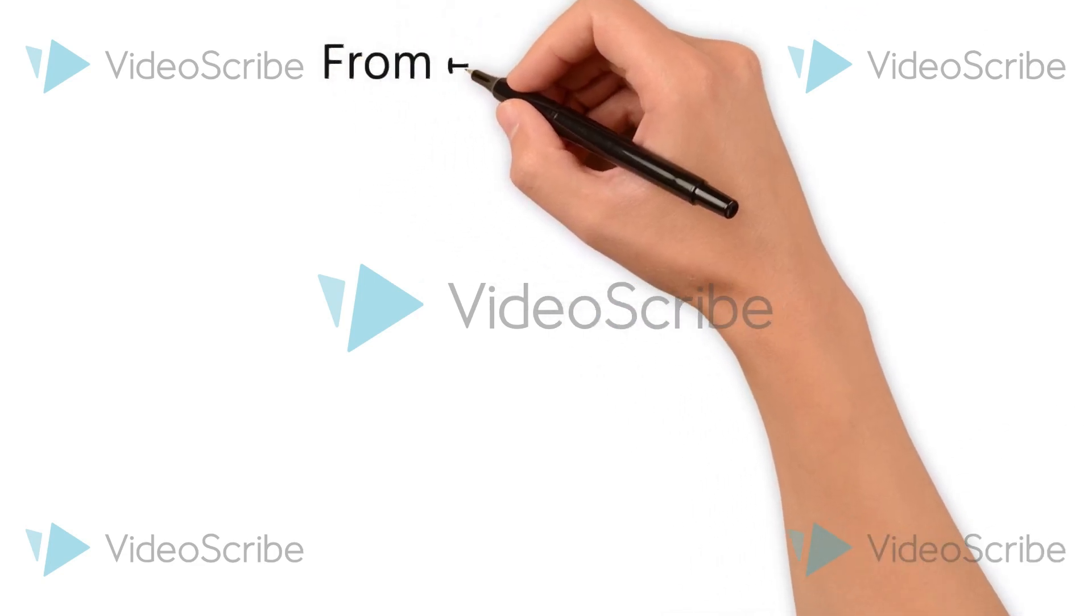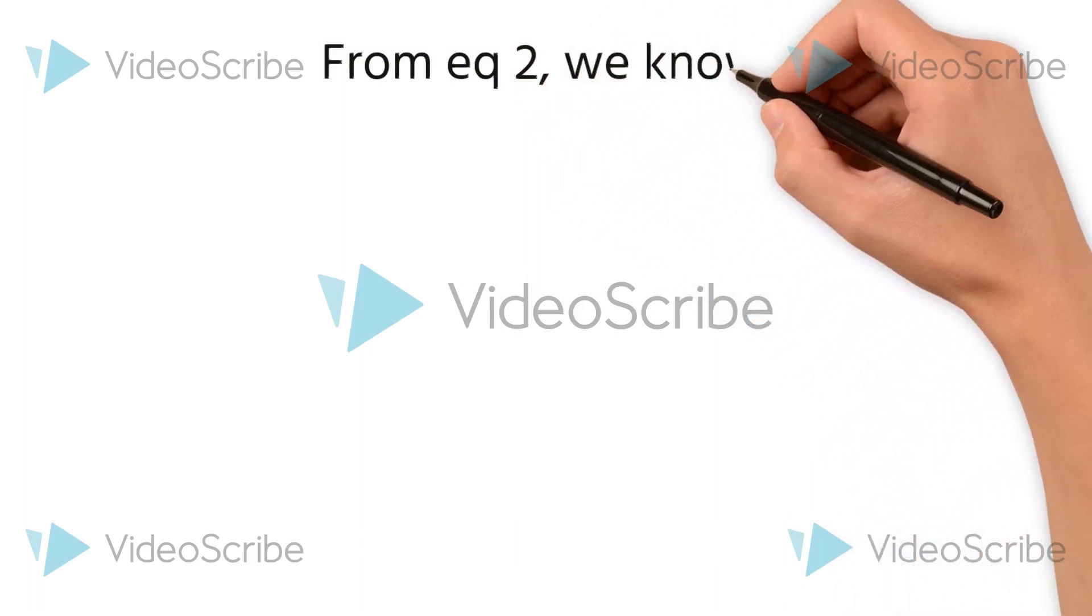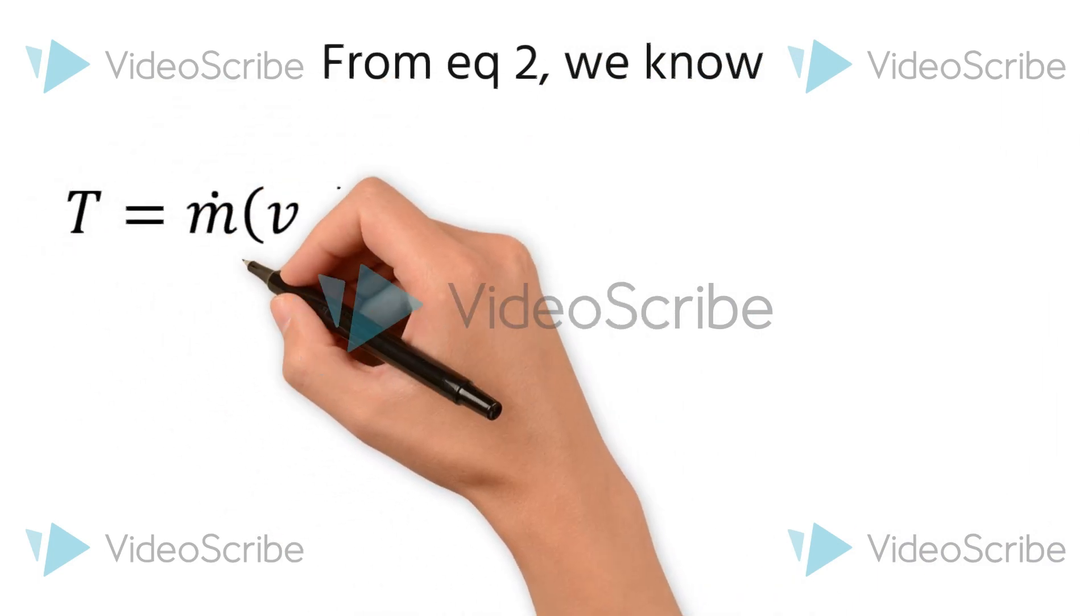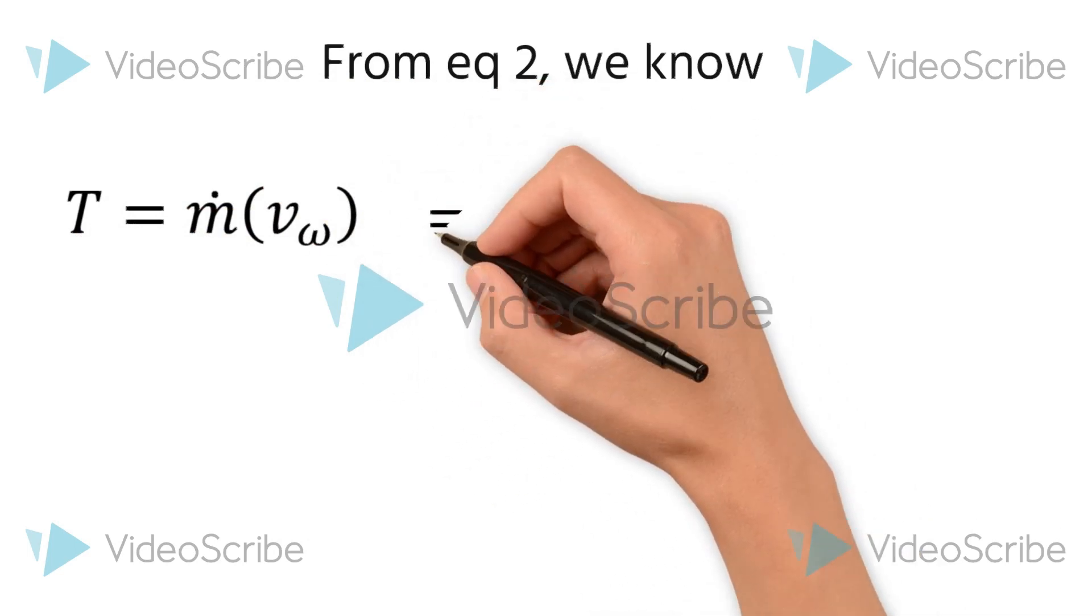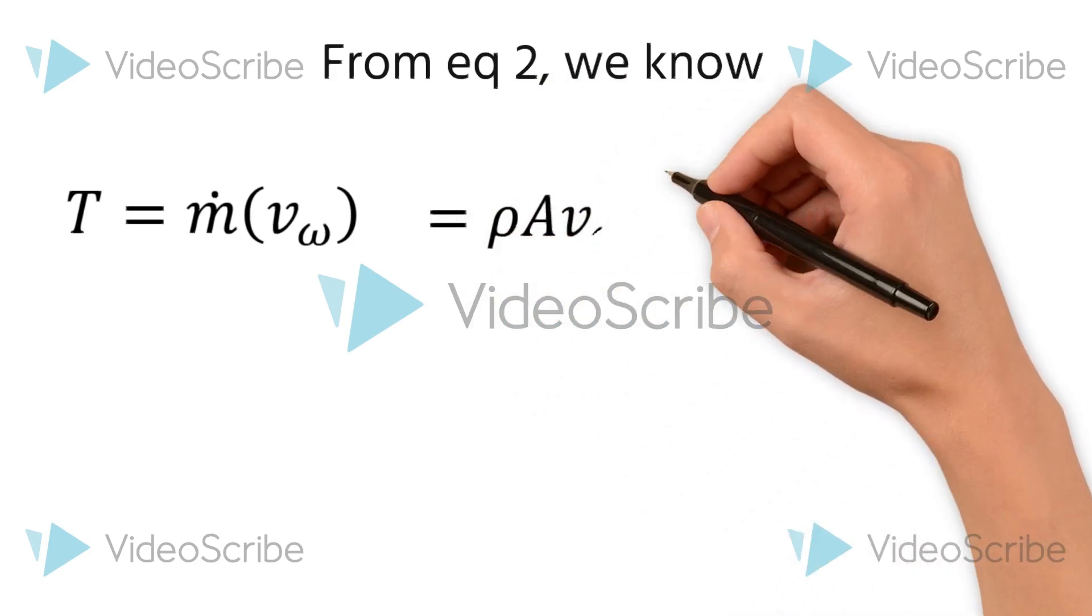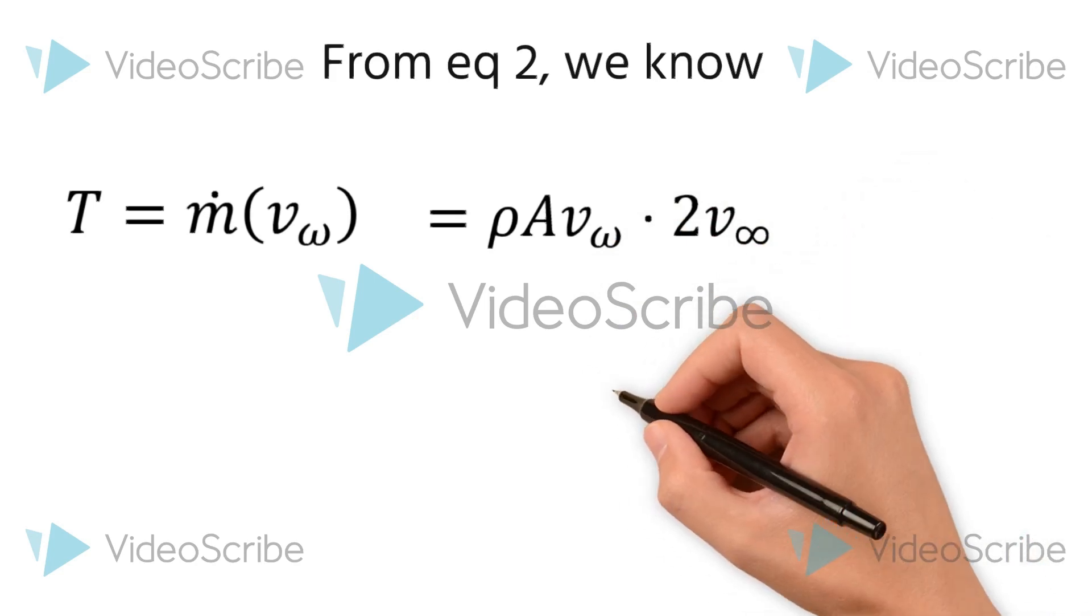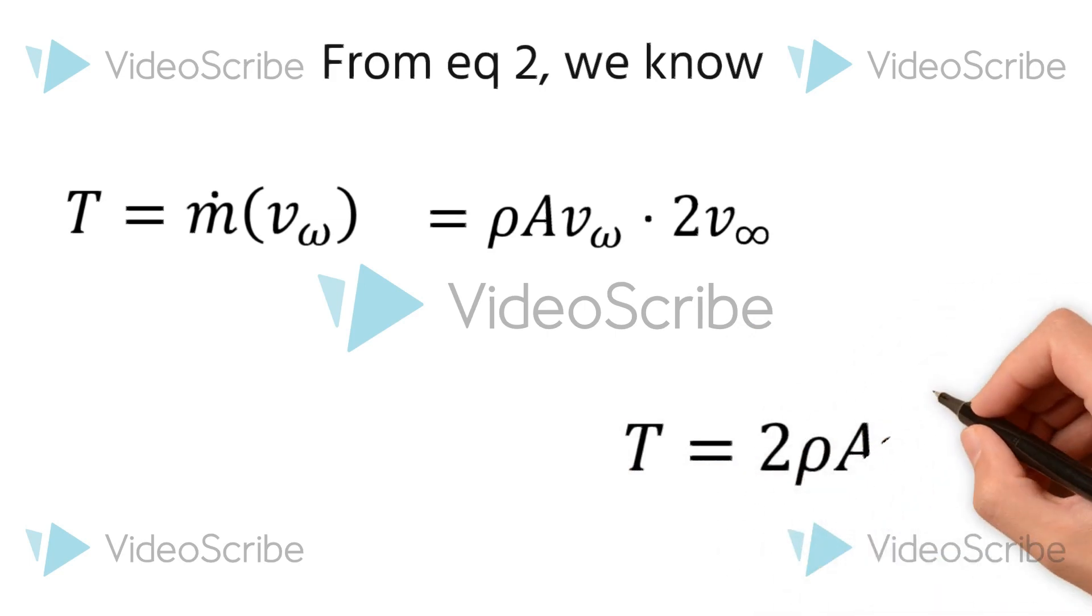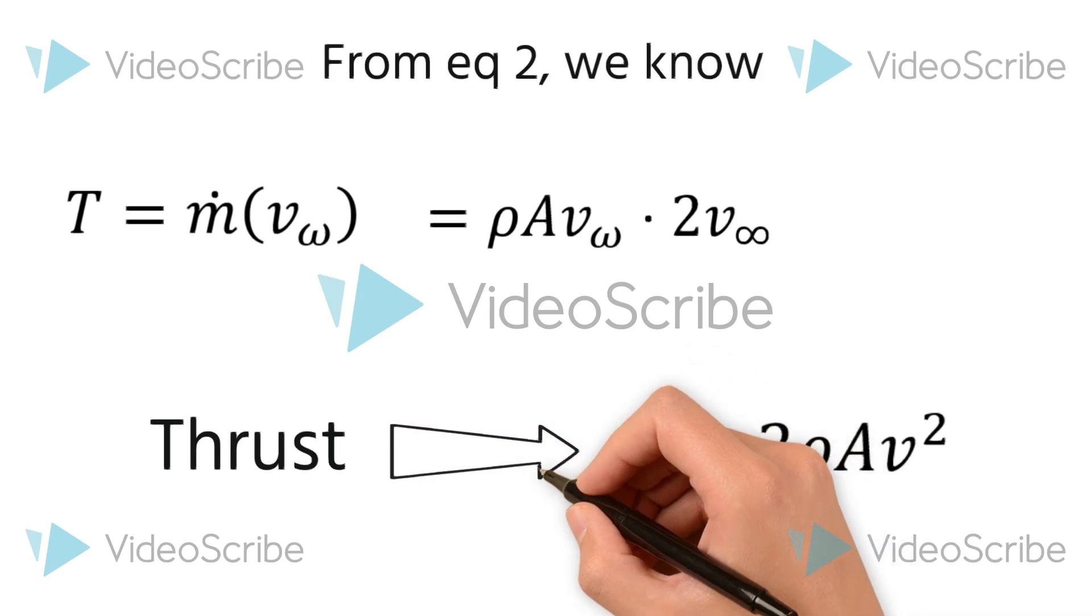We have previously derived equation number 2: T equals thrust equals mass flux times wake velocity. Now we are going to substitute the values of the mass flux and the wake velocity that we have just derived. So the thrust value becomes T = 2ρAv². This equation gives the thrust of the propeller.